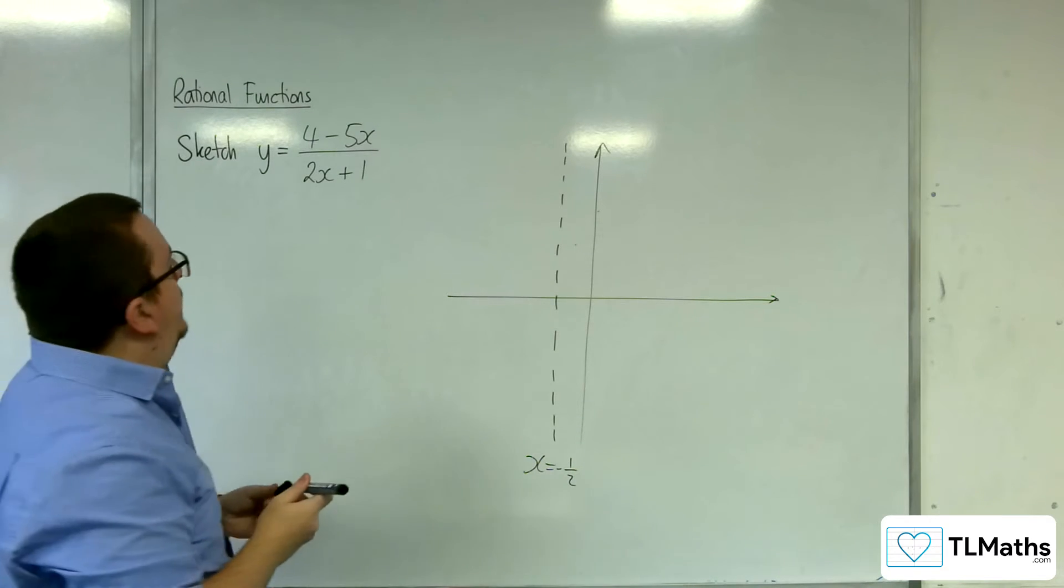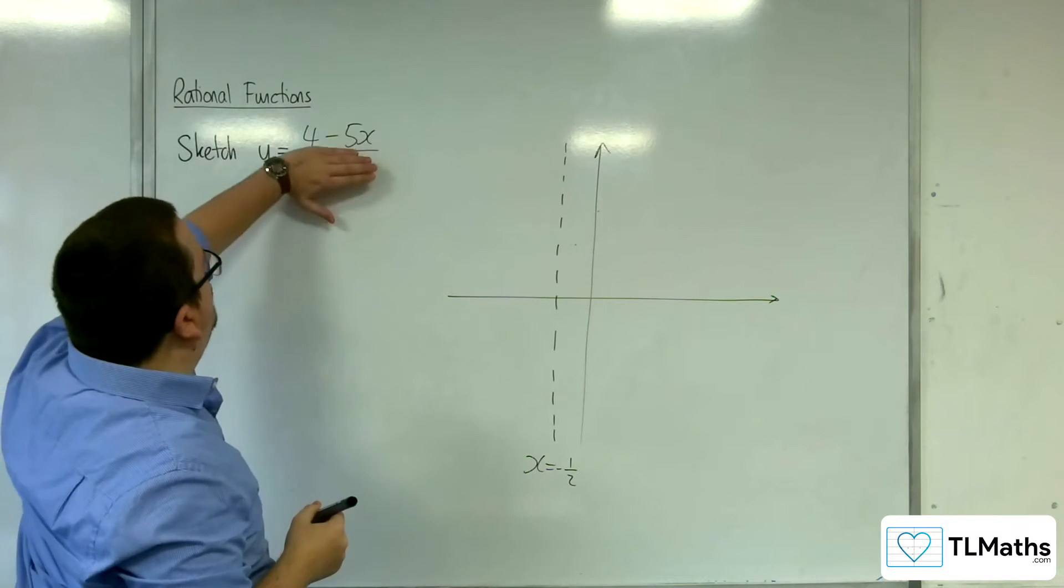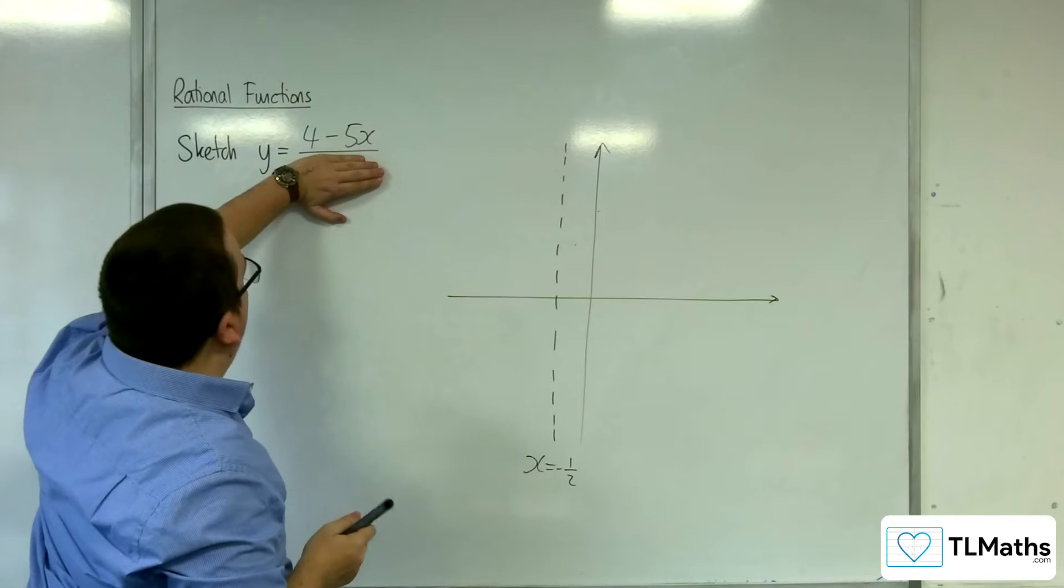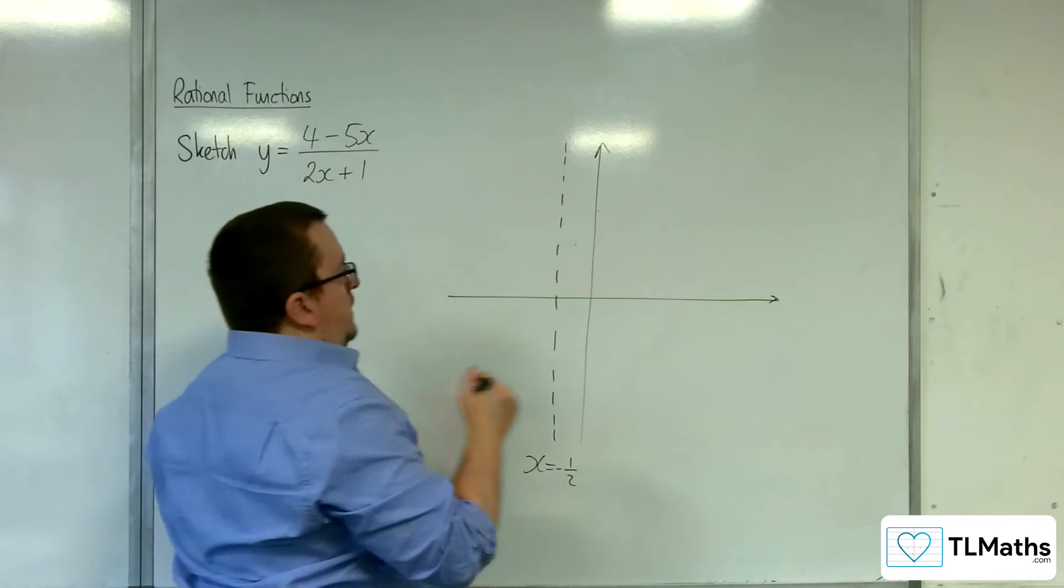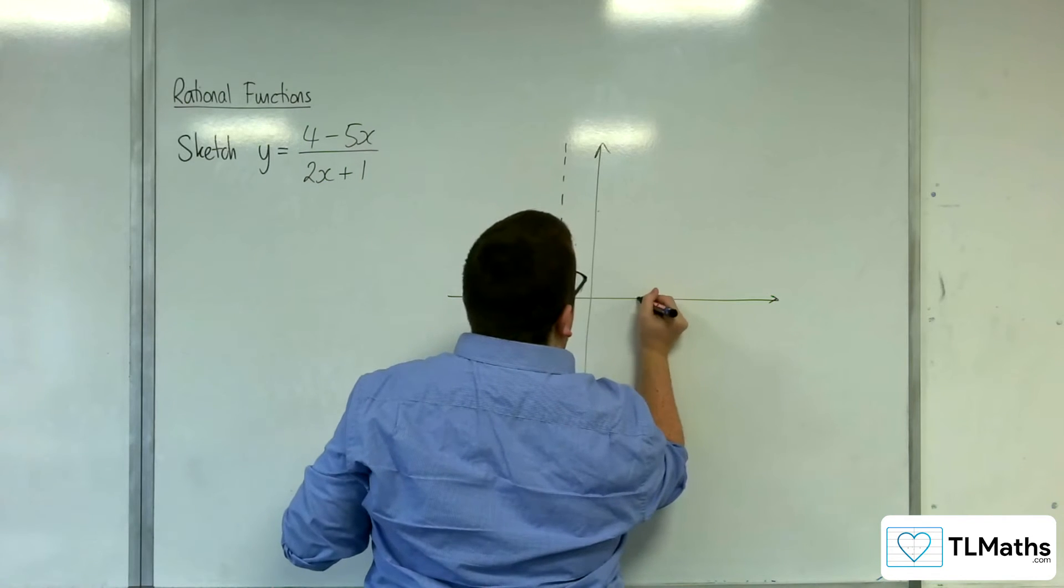Where is it crossing the x-axis? Well, that is when the numerator is 0. So that will be at 4 fifths. x equals 4 fifths. So somewhere here.